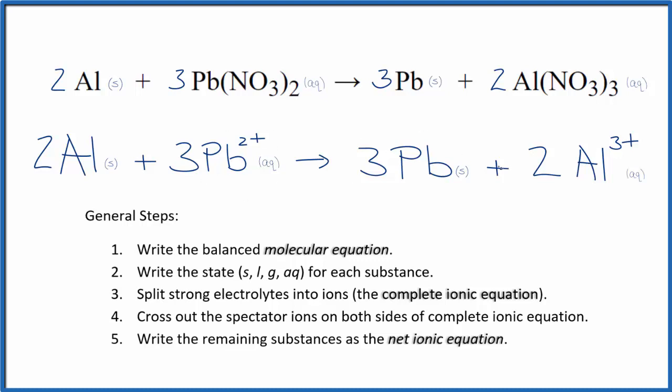Three of the Pb, three Pb. That's good. I can also see the charge is balanced. Three times two plus, that gives me six plus. Two times three plus, that gives me six plus. So the charge is the same on both sides.